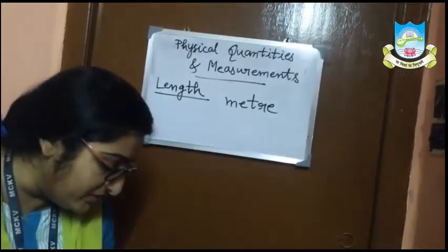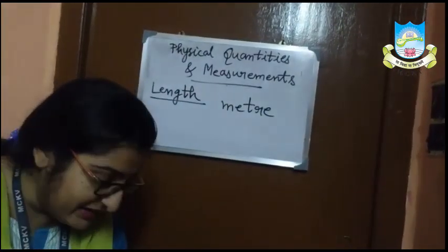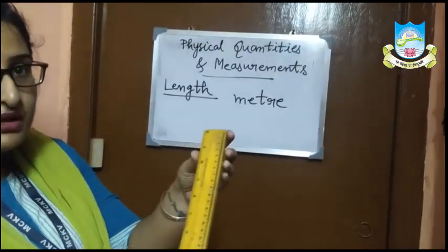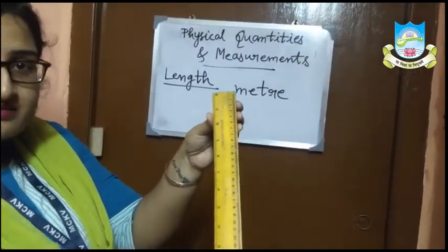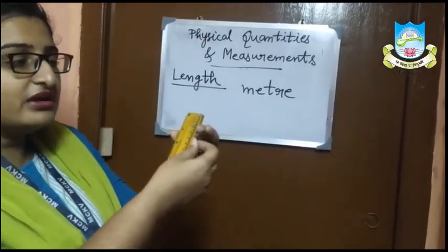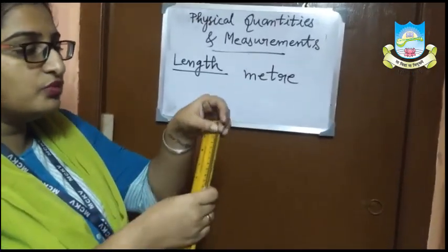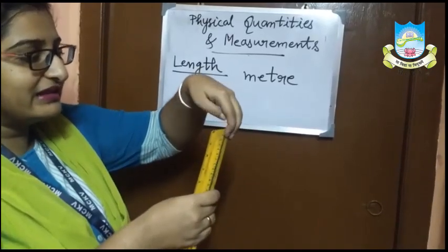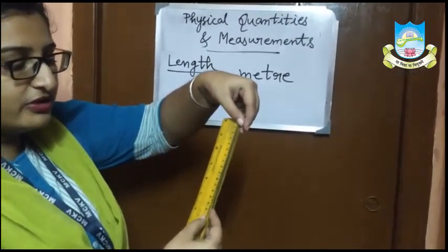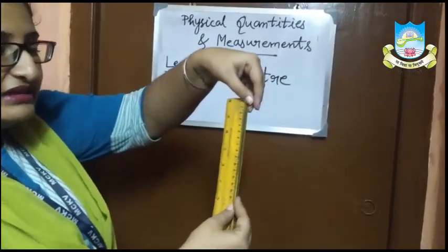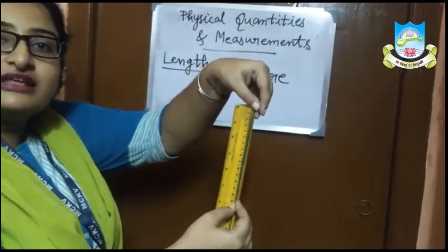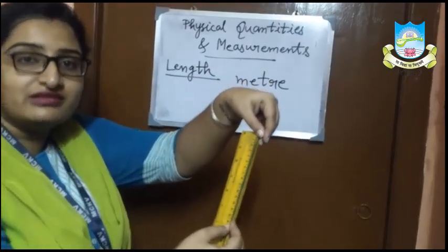We use a measuring scale or measuring tape for measurement of length. Here we have a measuring scale — on one side we have a centimeter scale and on the other side we have inches. I will measure the length of this piece of wool. We hold one end at 0 centimeter and the other end is at 15 centimeter.